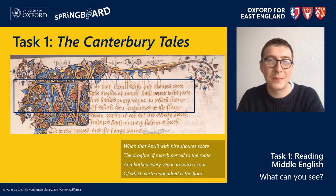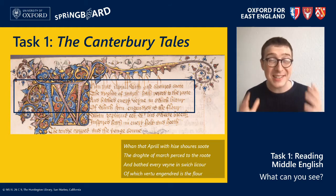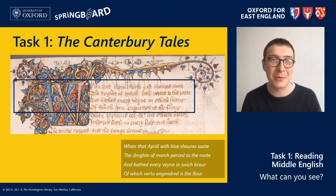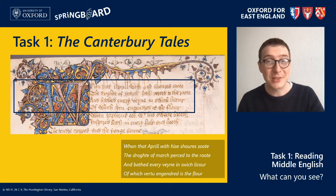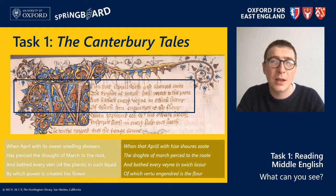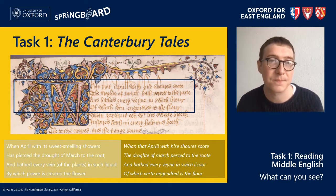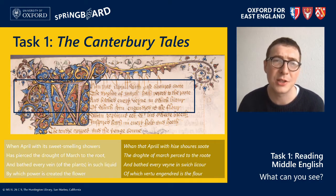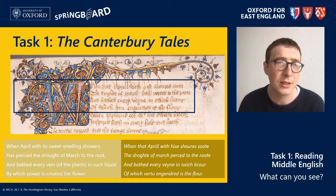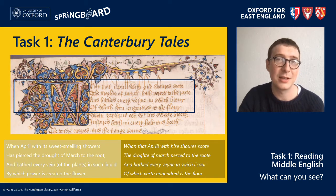How was that? Well, if you managed to get even a few words, excellent — you can now read a 700-year-old manuscript. Here then is a transcription of what it says on the right, and a version in modern English on the left. I'll read the original just so that you can get a sense of how Middle English sounded: 'Whan that Aprill with his shoures soote, the droghte of March hath perced to the roote, and bathed every veyne in swich licour, of which vertu engendred is the flour.'